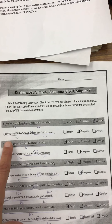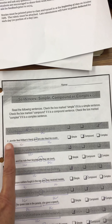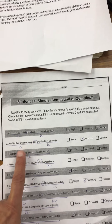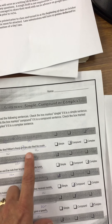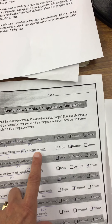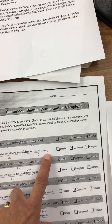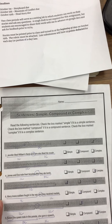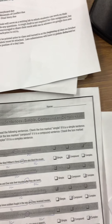Is there a subject-verb pair? Yes — 'Jennifer liked.' There's subject and verb. Could this stand alone? 'Jennifer liked Williams' friend?' Yes, that's an independent clause. Is there a subject-verb pair after it? Yes — 'you liked.' Could this stand alone? 'You also liked his cousin?' Yes. So we've got two independent clauses joined by a coordinating conjunction. This is a compound sentence.